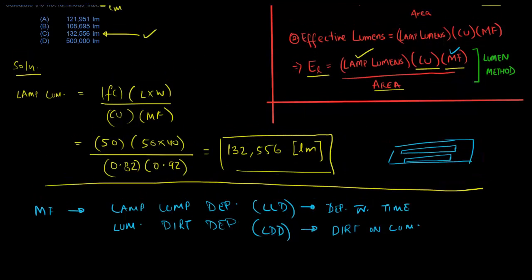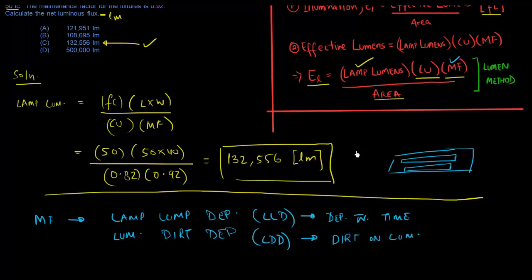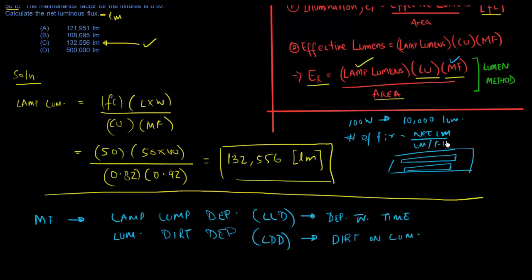Most problems would ask for the net luminous flux, but in the real world — or even in an exam problem — you might be asked for the number of fixtures required. For example, if you have 100-watt fixtures each giving out 10,000 lumens, you can find the number of fixtures as net lumens divided by lumens per fixture. In this case, 132,556 divided by 10,000 gives approximately 14 fixtures.